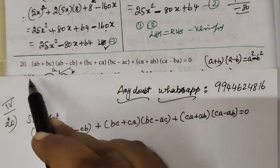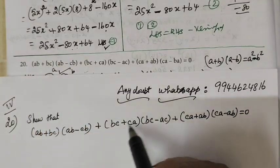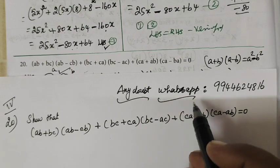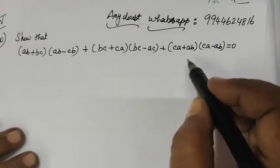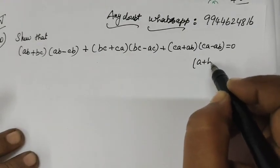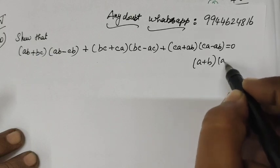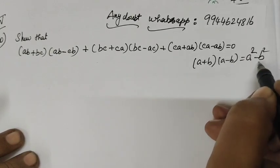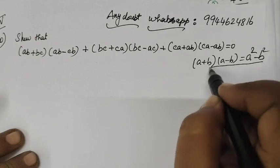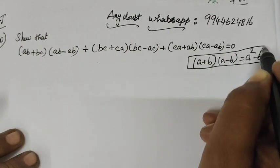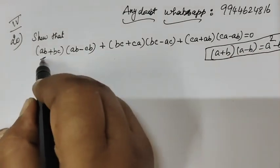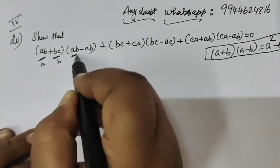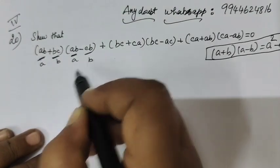So now Question number 20. For this we are using the formula (A + B)(A − B) = A² − B². This is the identity we use for this question. So this is A and this is B.